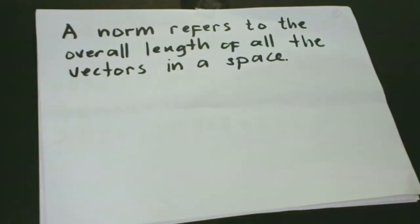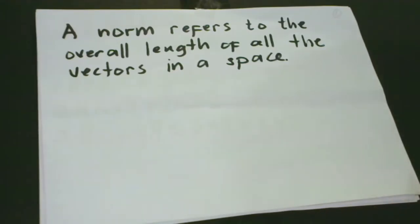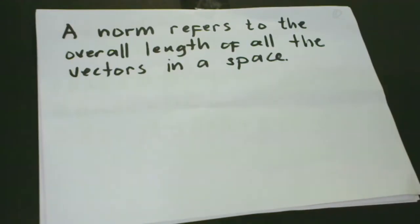In this lesson, we will learn about analyzing vector norms' role in deep learning. The very first question in your mind must be: what is a norm? A norm refers to the overall length of all the vectors in a space. Intuitively, a norm of a vector x measures the distance from the origin to a certain point.